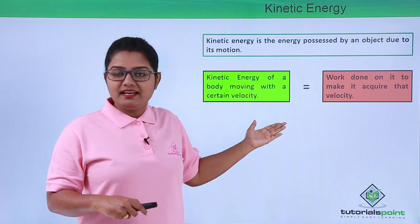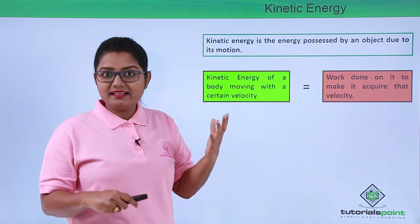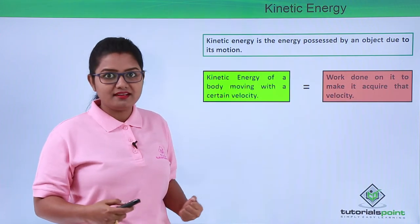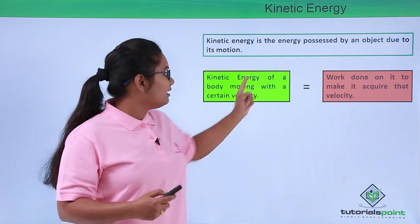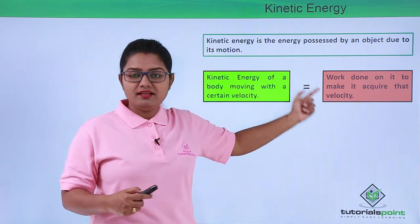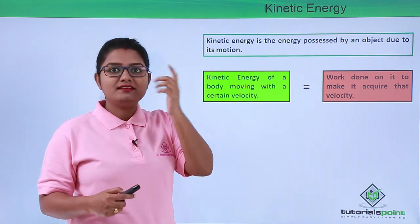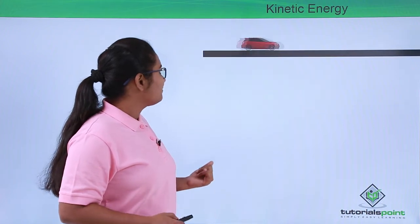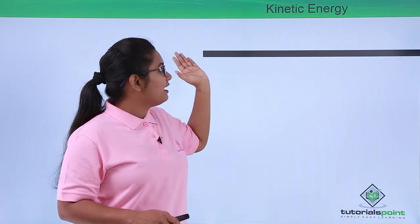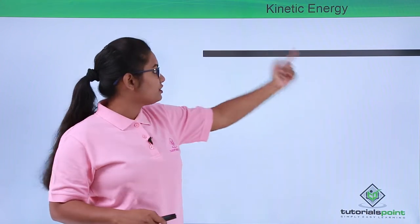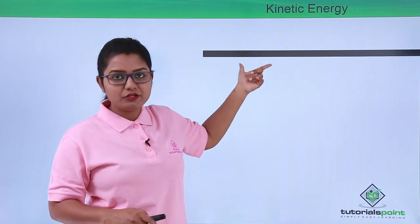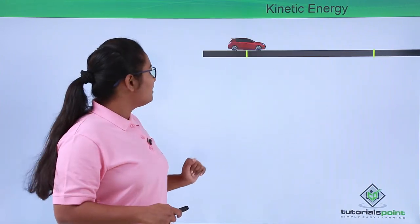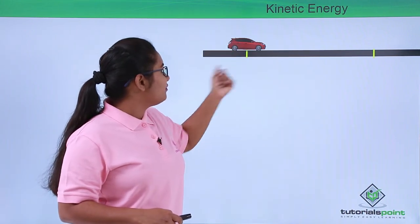Now let us try to find an expression which we can use to calculate the kinetic energy of a body moving with a certain velocity. To do that, we need to calculate the amount of work done on the body to acquire that velocity. Let us say we have a road where a car has moved, and we will consider two positions of the car on this path.